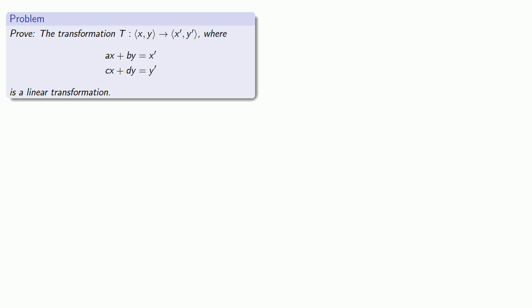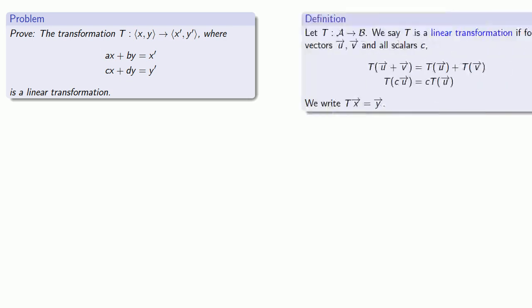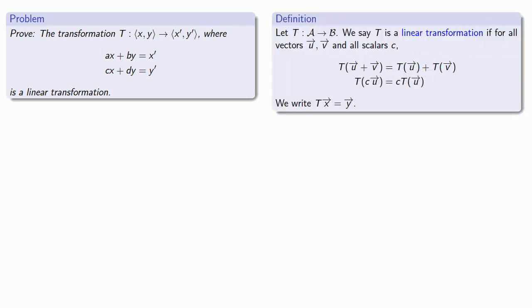Part of the reason that we do proof in mathematics is it's a really good way of reviewing some basic ideas. In this particular case, let's review what it means to be a linear transformation. And if we want to prove something is a linear transformation, we have to prove that it meets these two requirements. So first, let's prove that the transformation applied to a sum of vectors is the sum of the transformation applied to the vectors individually.